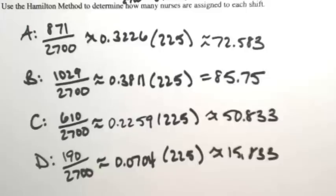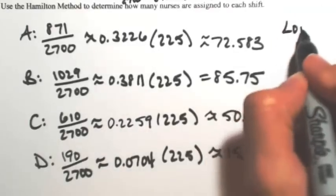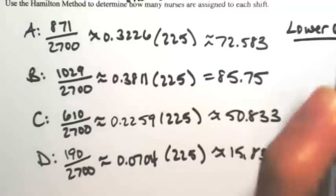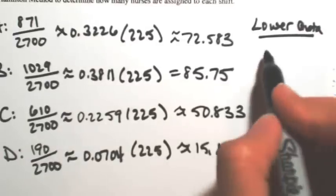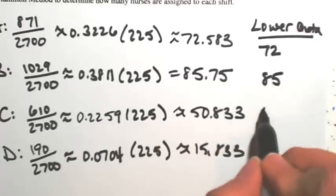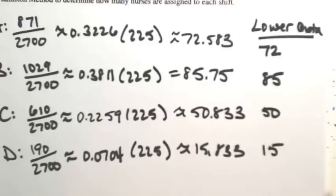So in using the Hamilton method, the first thing we're going to do is give each shift the lower quota. So that's going to just be rounding down. So the lower quota for A would be 72, for B would be 85, C would be 50, D would be 15.